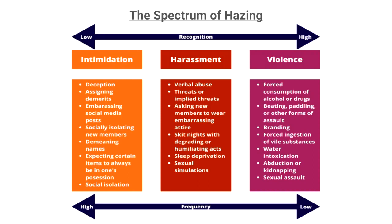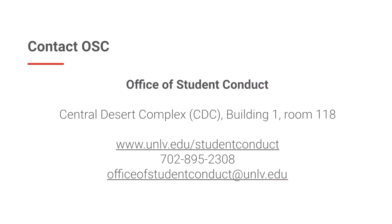Hazing occurs on a spectrum centered around two principles — recognition and frequency — and three actions: intimidation, harassment, and violence. The most violent forms of hazing, such as the forced consumption of alcohol, drugs, or vile substances or beatings, occur at a lower frequency but are highly recognized. Whereas intimidation hazing, such as demeaning names or expecting items always in one's possession, or harassment hazing including verbal abuse or sleep deprivation, happen far more frequently but are often not recognized as harmful hazing behaviors. Increasing awareness of these low-recognition, high-frequency forms of hazing can shift the culture toward more positive, less harmful ways of welcoming new members into your organizations.